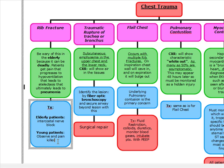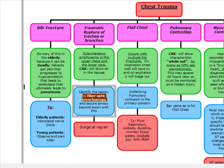Next topic is traumatic rupture of the trachea or bronchus. What we want to remember is pneumomediastinum — subcutaneous emphysema in the upper chest and the lower neck. This usually happens after a high-speed car accident on the test. The chest x-ray is going to show air in the tissues. To identify the lesion and secure the airway beyond the lesion, we're going to do a fiber optic bronchoscopy, and we're going to repair it with surgical repair.